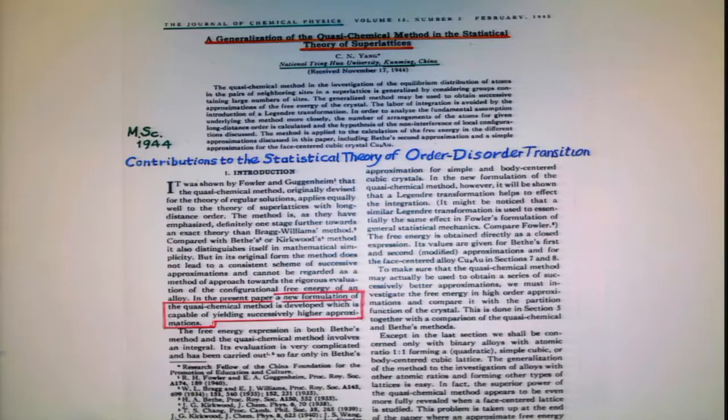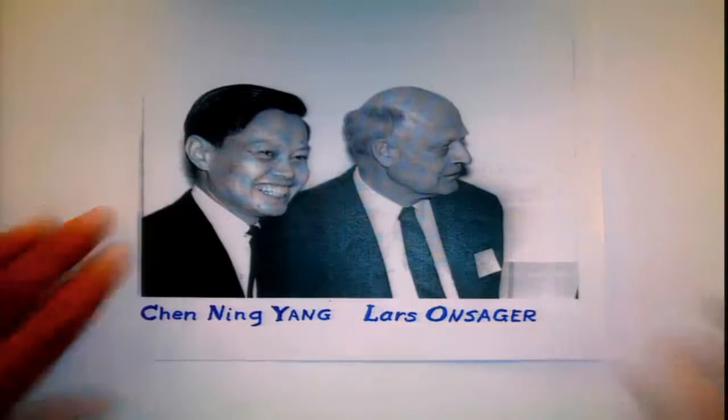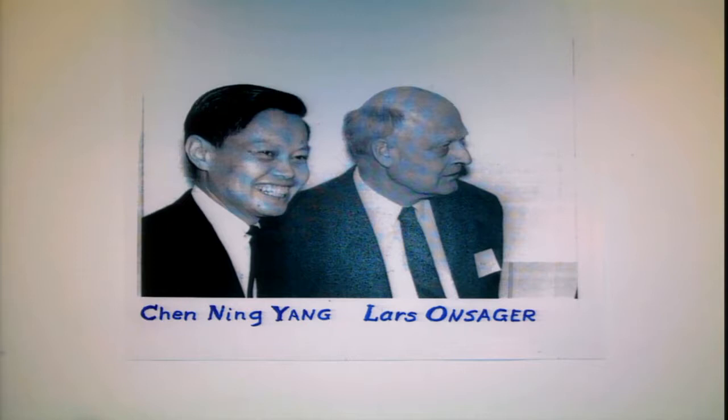Frank tells how he looked at various of these aspects, and many people tried to generalize the Ising model solution. It was many years later that Frank met Onsager. This is a picture — a rather nice one — and this was on the occasion in March 1965. And so that's a picture that could have been posed just for it.